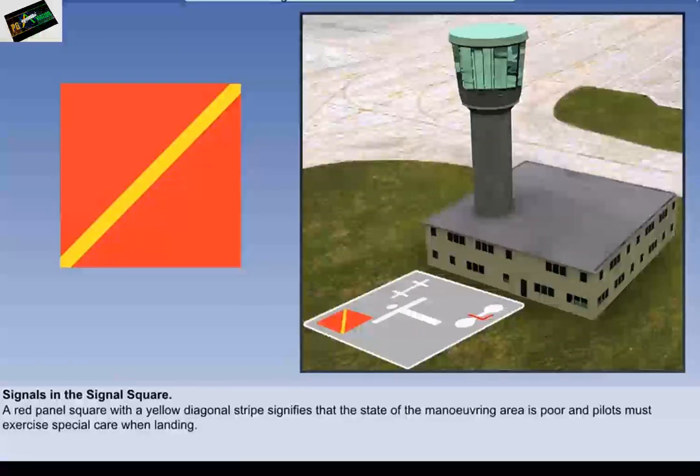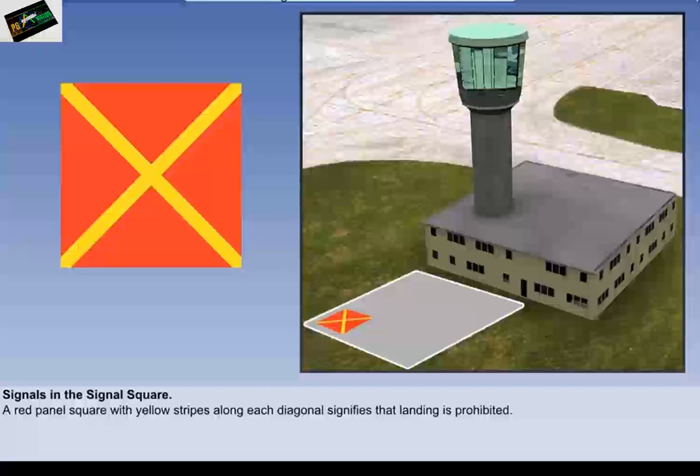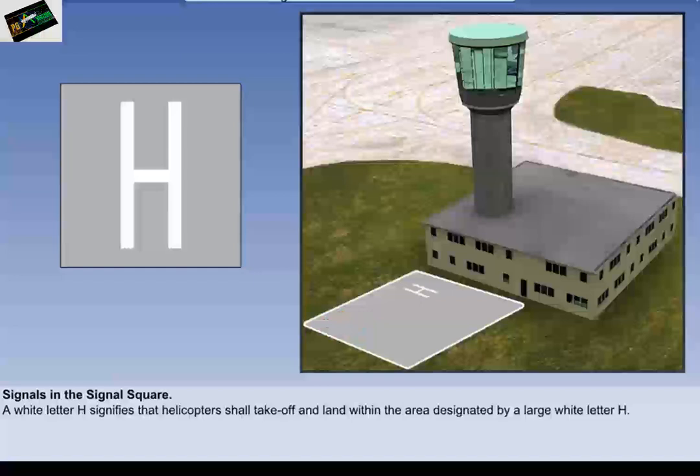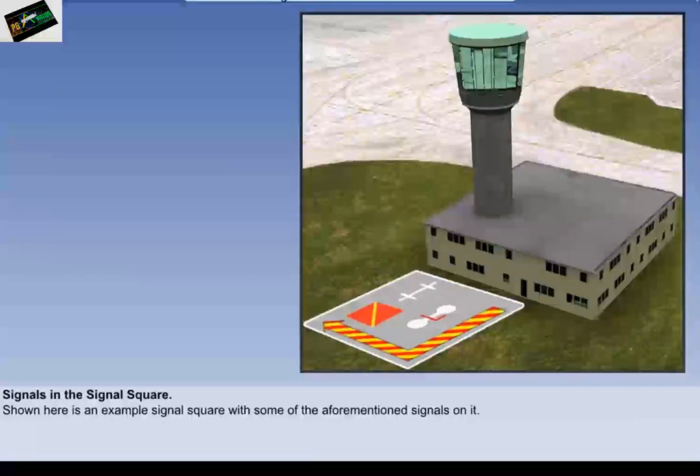A red panel square with a yellow diagonal stripe signifies that the state of the manoeuvring area is poor and pilots must exercise special care when landing. A red panel square with yellow stripes along each diagonal signifies that landing is prohibited and most likely will continue to be so for some time. A white letter H signifies that helicopters shall take off and land within the area designated by a large white letter H. The example signal square shown here incorporates some of these signals.